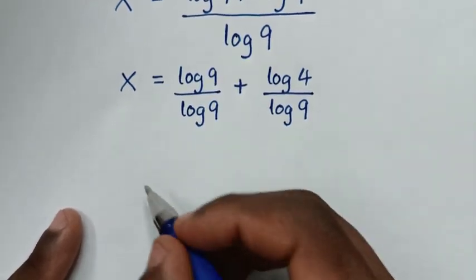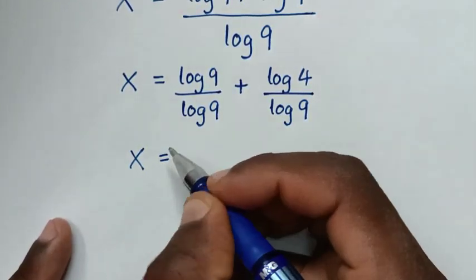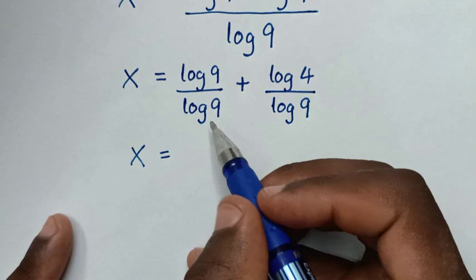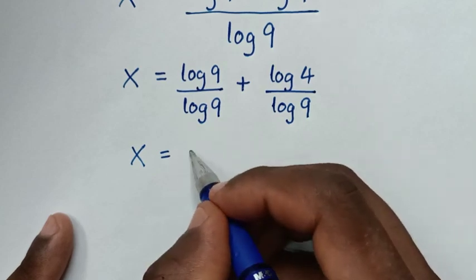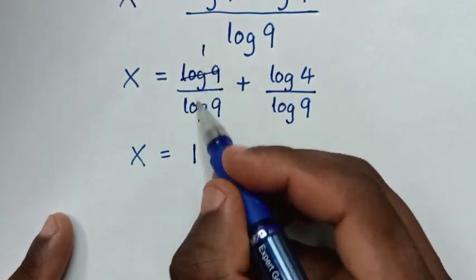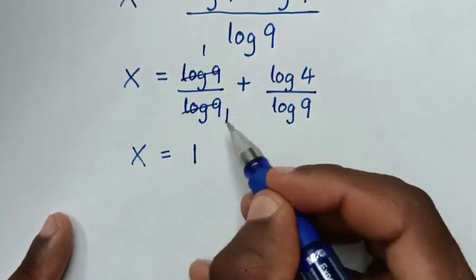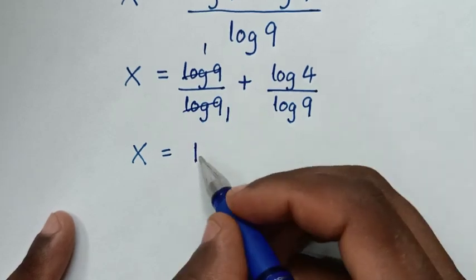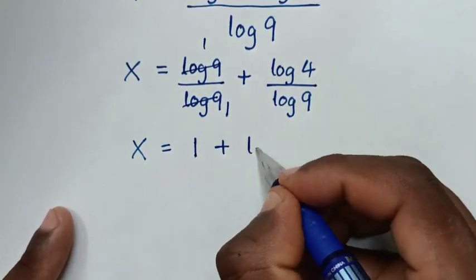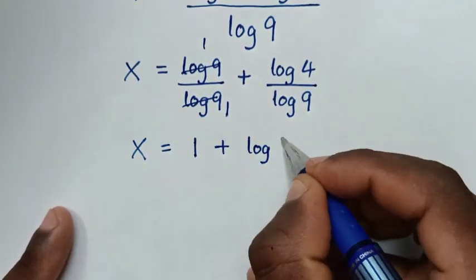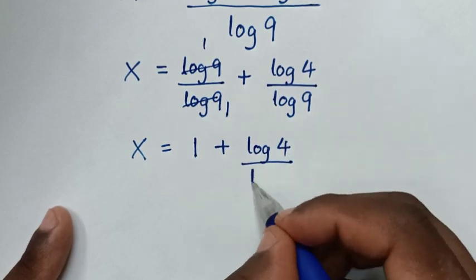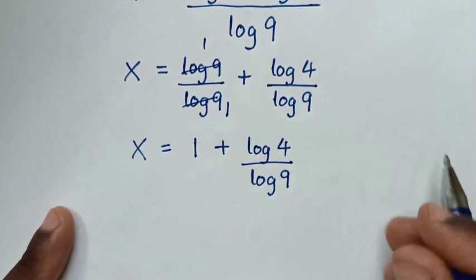Then it will be x is equal to — log of 9 over log of 9 is 1. To simplify, this will cancel by 1, and this by 1. So here it will be 1, then plus log of 4 over log of 9.